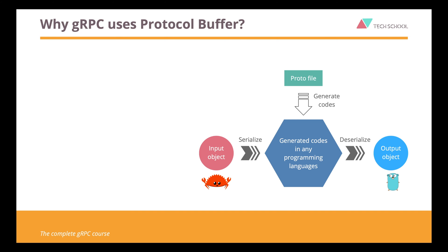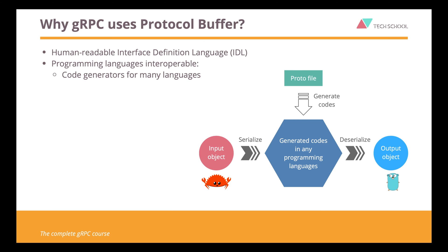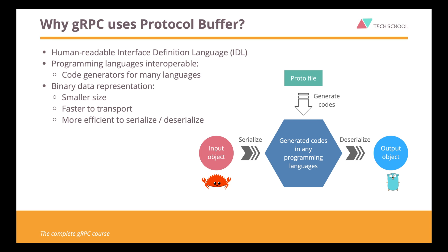You may wonder why gRPC uses protocol buffer. Well, there are many reasons. First, it's super easy to read and understand. Second, it's language interoperable with automatic code generation for many languages. It represents data in binary format, which is smaller in size, faster to transport, and more efficient to serialize than text-based formats like JSON or XML. It provides a strong typed API contract between client and server, which is super safe to work with.